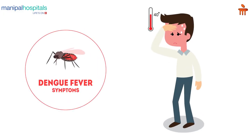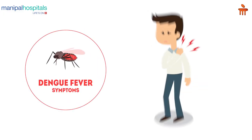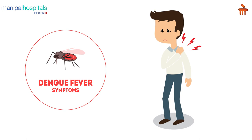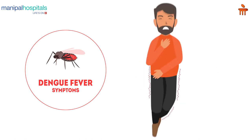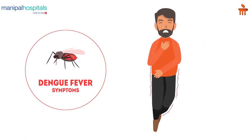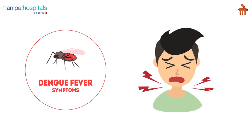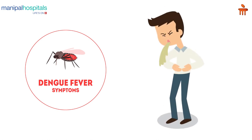Most commonly we see fever, headache, retro-orbital pain — pain behind the eyes. They can have severe body ache, back pain. Some people can have sore throat or cold. And a few people can present with abdominal pain, vomiting, or loose motions.